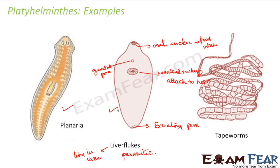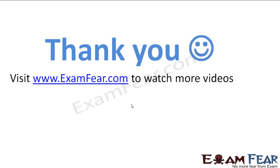Another example is tapeworms. They have a ribbon-shaped body covered with a thick cuticle, which is a hard covering that protects internal body parts. The ribbon shape aids better absorption of nutrients. Tapeworms have no digestive tract — food absorption happens directly through the skin.